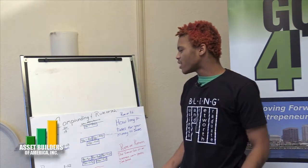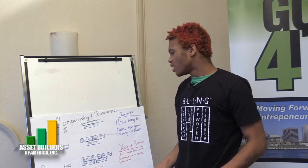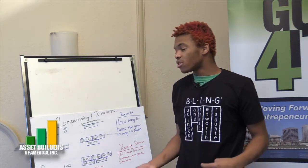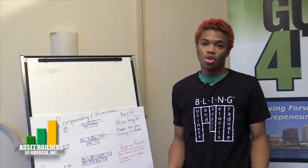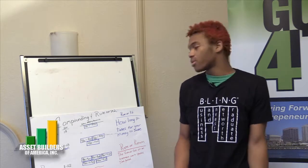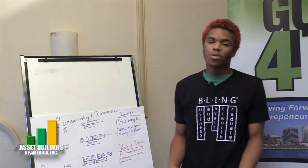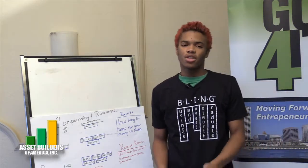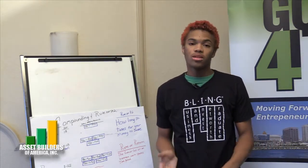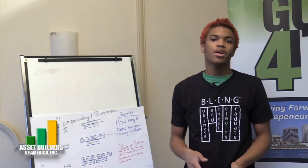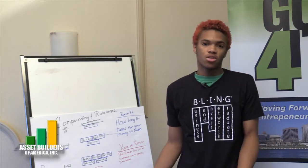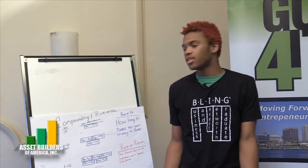So say you have a savings account. A savings account rate of return normally generates 1%. When applying the rule of 72, you'll have to do 72 divided by 1, which will take you 72 years for your money to double.